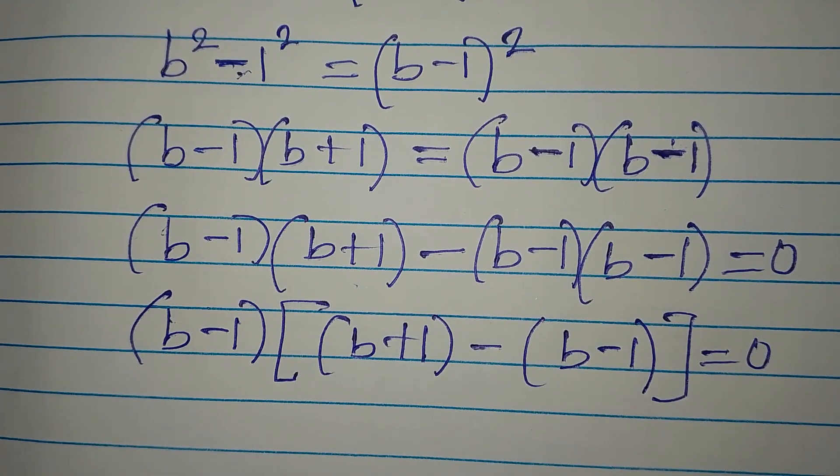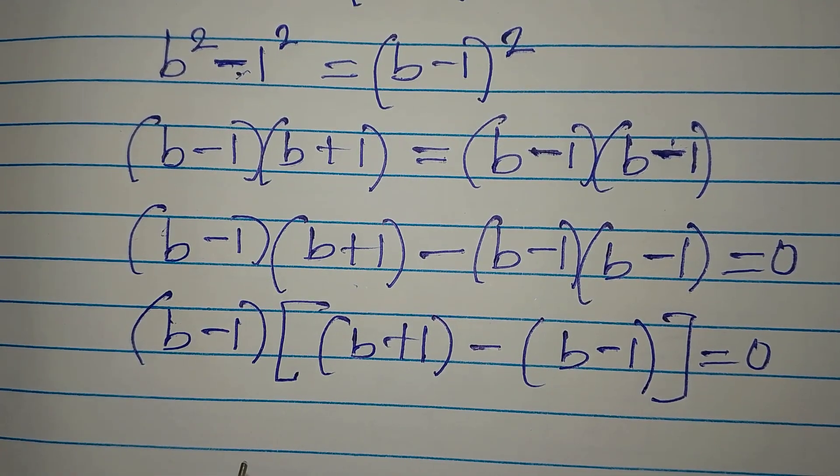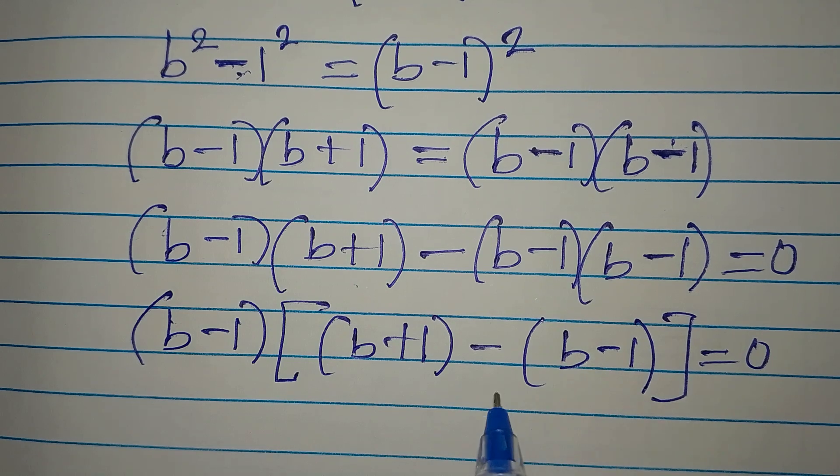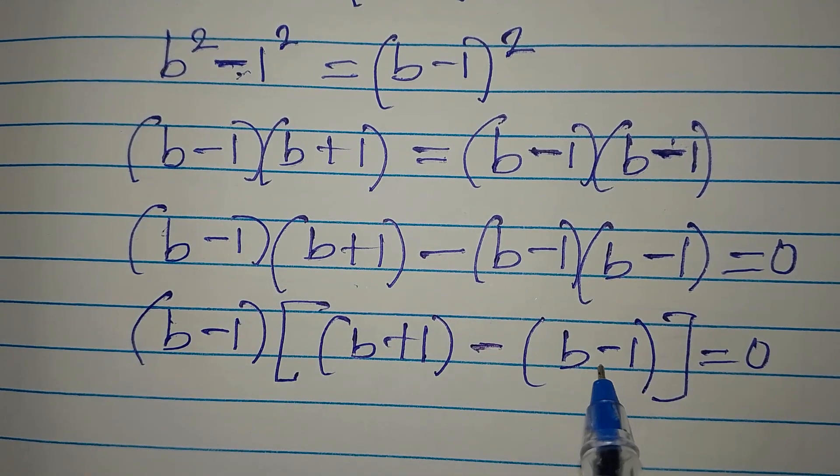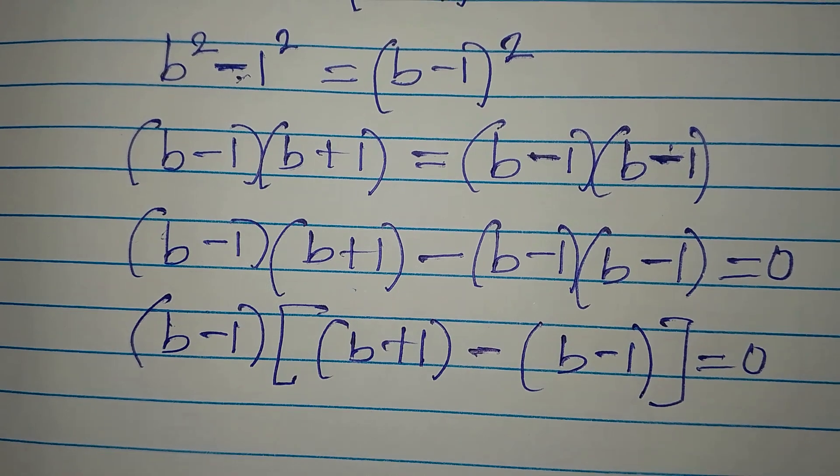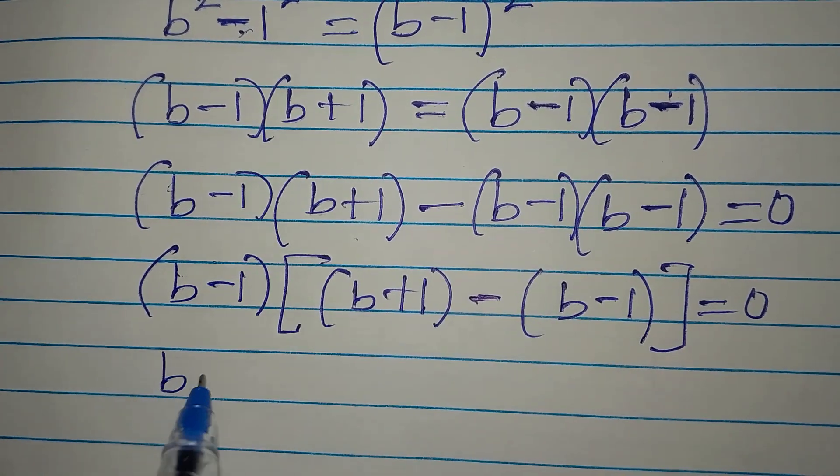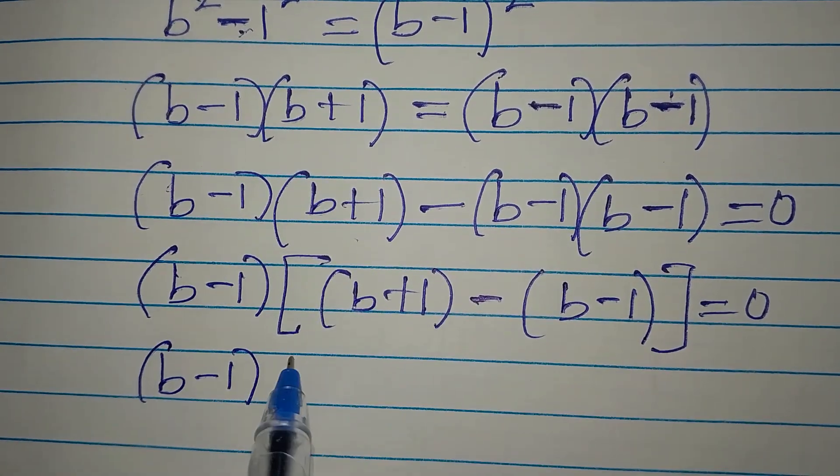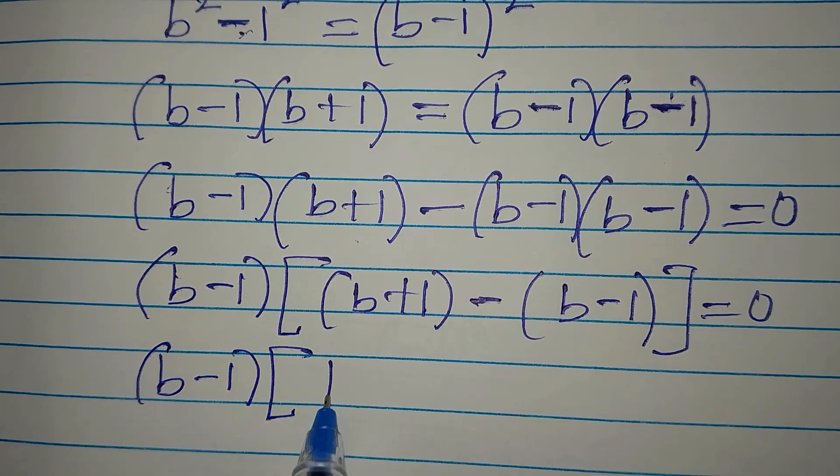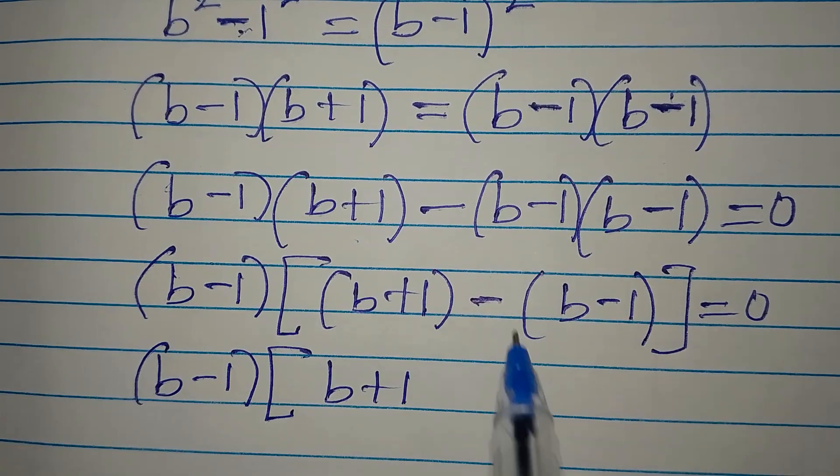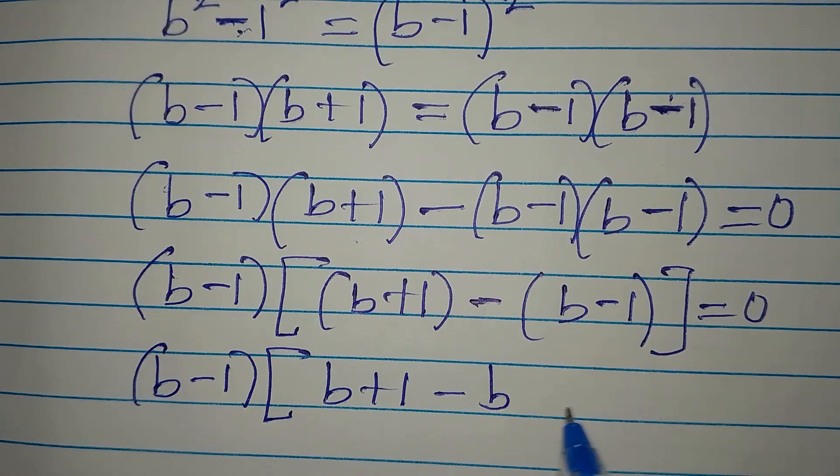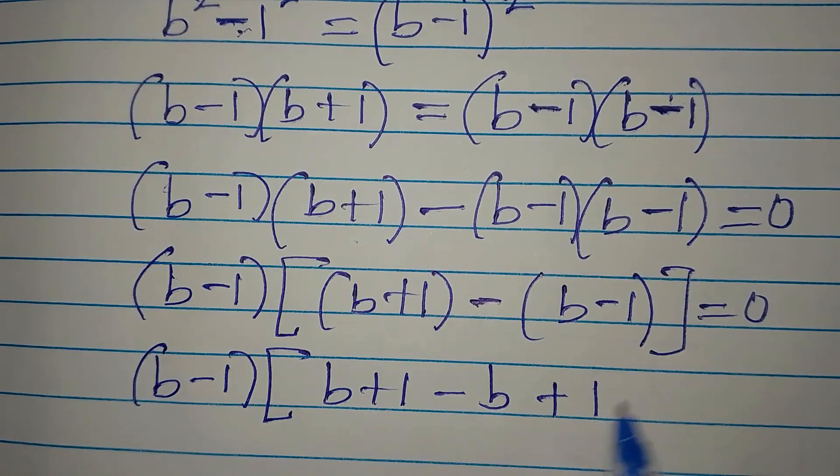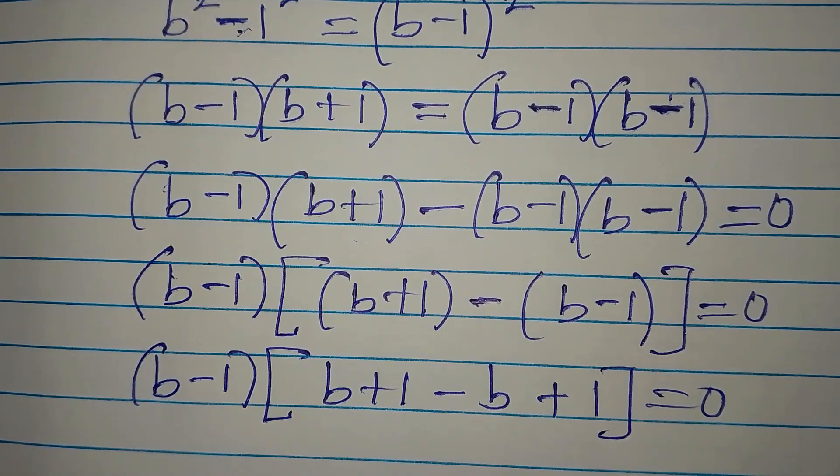Now what do I do from here? We have to open this bracket and if you're going to open the bracket, it is this negative that will multiply what you have in the second bracket. So we have b minus 1. Then here we're going to have b plus 1. Then negative times b is negative b. Negative times negative 1 is positive 1. Then this is equal to 0.